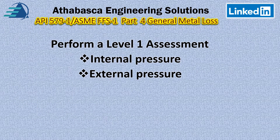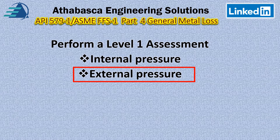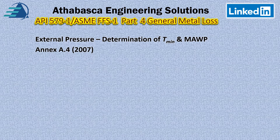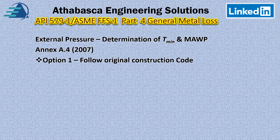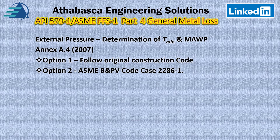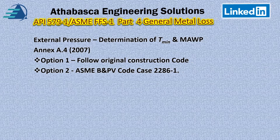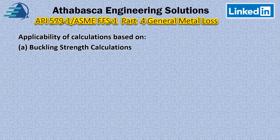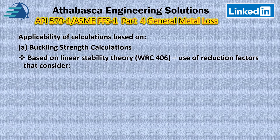We're going to perform an external pressure evaluation. We can use Annex A4 2007, and we have the option of following option one, the original construction code, or we can use ASME Boiler Pressure Vessel Code Case 2286-1. They also remind us that there is buckling that can occur when you have a vacuum condition, so there are also buckling calculations to consider.